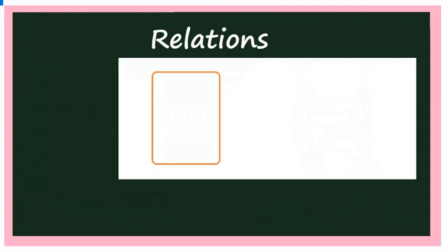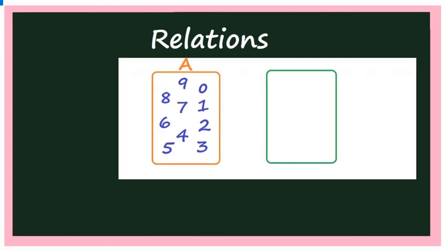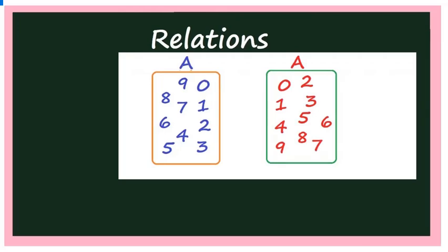Let us take one more example. Let A be the digits from 0 to 9, and again take the same set A. Map each element of A to its square: 0²=0, 1²=1, 2²=4, 3²=9. For 4²=16 — there is no 16 in set A since we only have single digits 0 to 9. So for elements 4, 5, 6, 7, 8, and 9, there is no image. This itself is a relation.